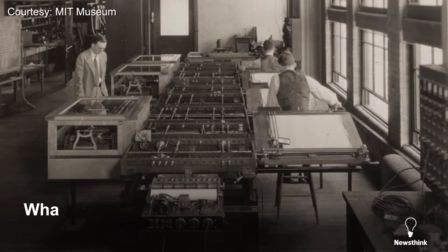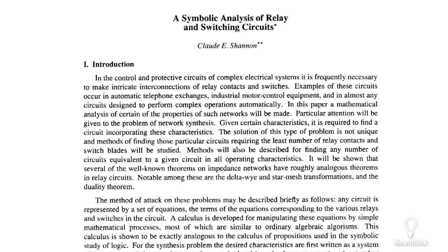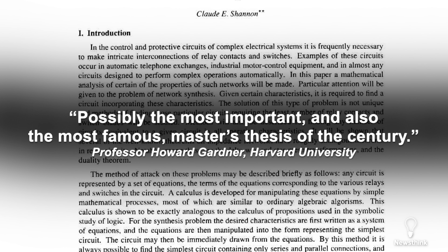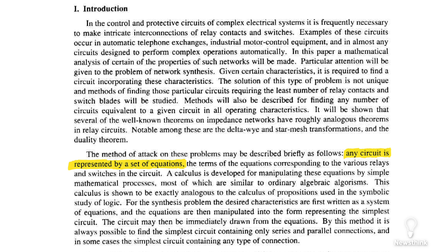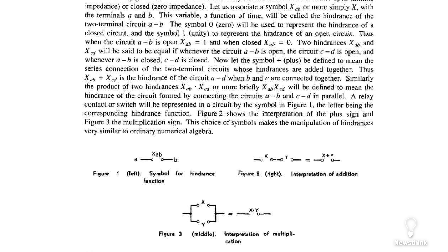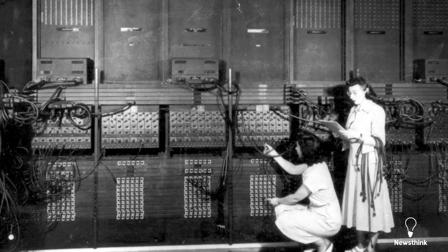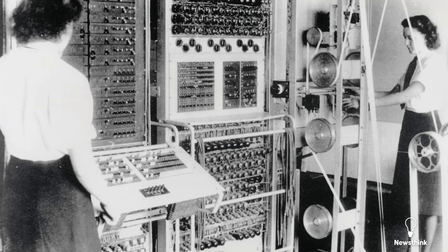Instead of clunky mechanical parts, what if flipping electrical switches could do the job? In 1937, Shannon wrote a master's thesis that changed the world — what Harvard University professor Howard Gardner called possibly the most important and also the most famous master's thesis of the century. He proved that any circuit, no matter how complex, could be represented by a set of equations. He took Boolean algebra and applied it to circuit design, proving that logical operations could be executed automatically using electrical switches. It was the first time anyone had made that direct connection, opening the door to a different way to design circuits. Before Shannon, circuit design was inefficient, built in an ad-hoc way, without a standard method to optimize or simplify.